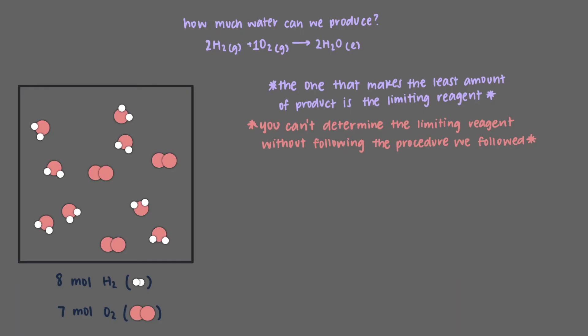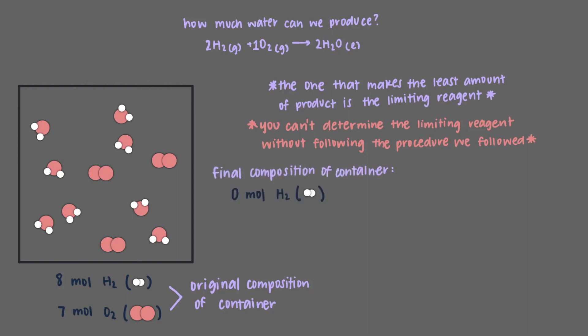To finish up: when the reaction is done, our container that originally had 8 moles of hydrogen and 7 moles of oxygen will have none of the limiting reagent, hydrogen, left over, and will have 8 moles of water. But how much oxygen is left? To form the 8 moles of water, we needed 4 moles of oxygen, which means 3 moles of oxygen are left over in the container.